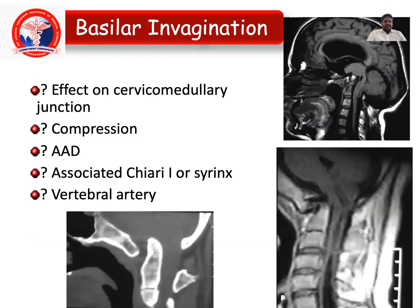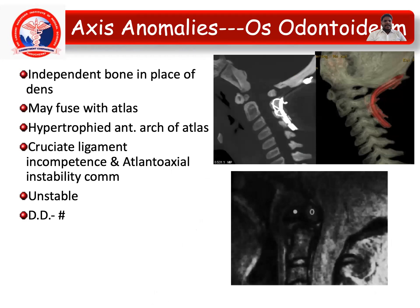Basilar invagination causes effects on the cervicomedullary junction, compression, associated Chiari, or vertebral artery compression/stenosis. Axis abnormalities include os odontoideum, which is an independent bone in place of the dens; it may fuse with the atlas, and a hypertrophic anterior arch of the atlas can be associated. Incomplete ossification and atlanto-occipital instability are common; differential diagnosis would be a fracture.